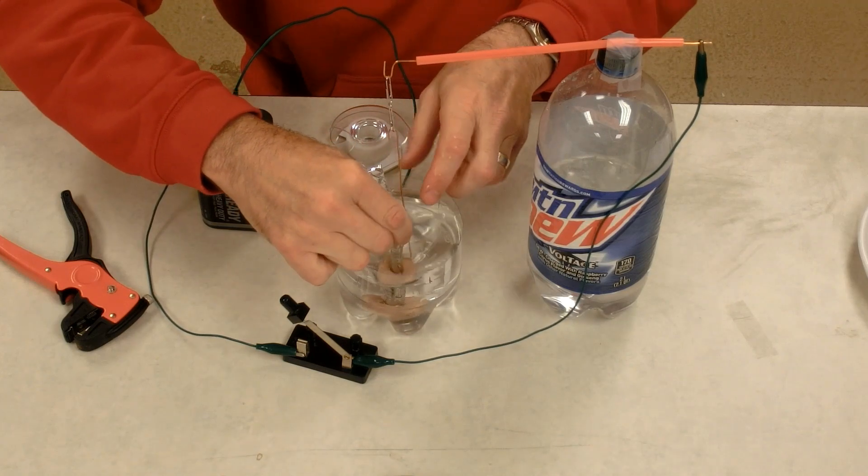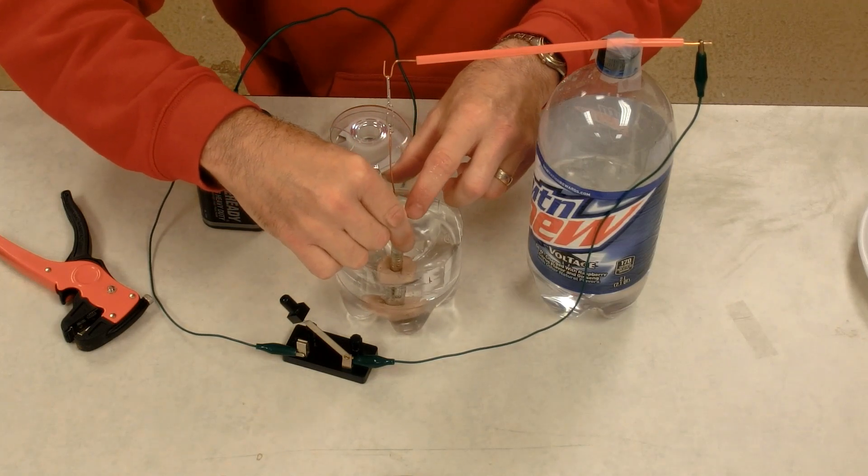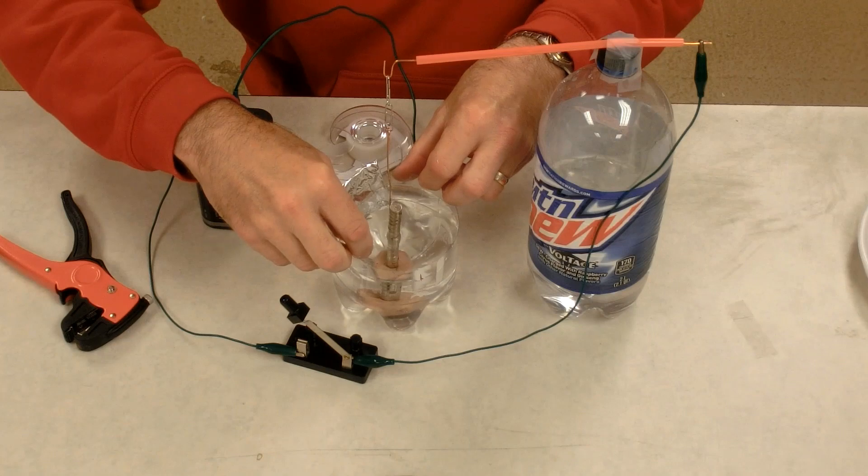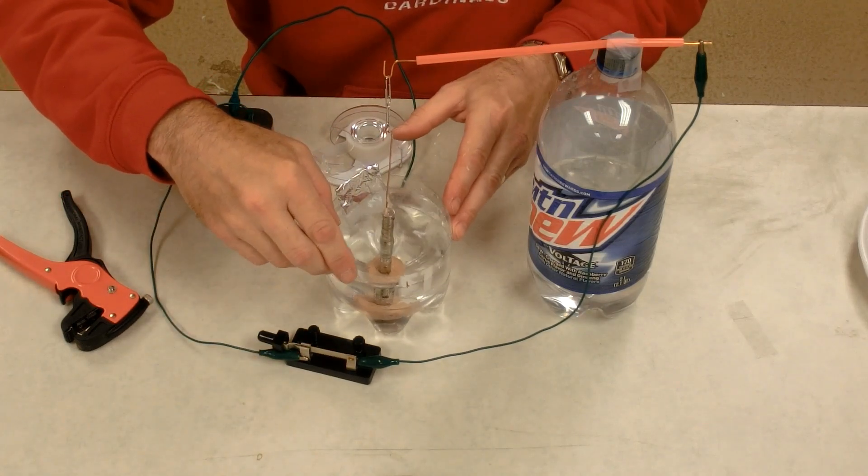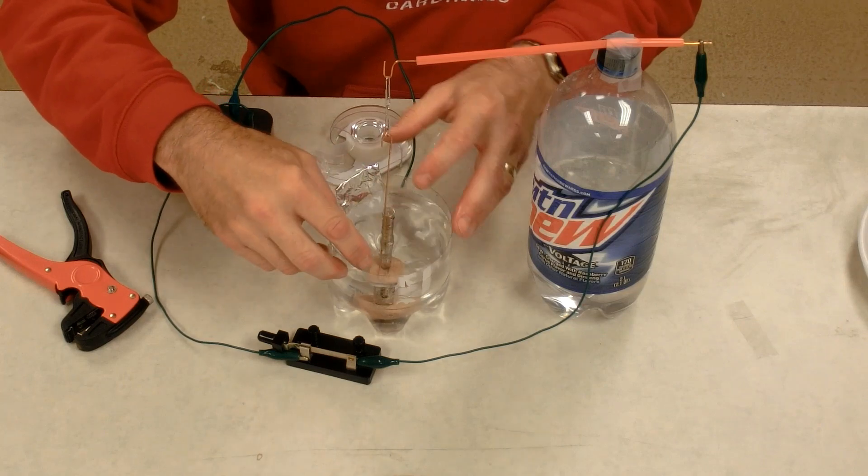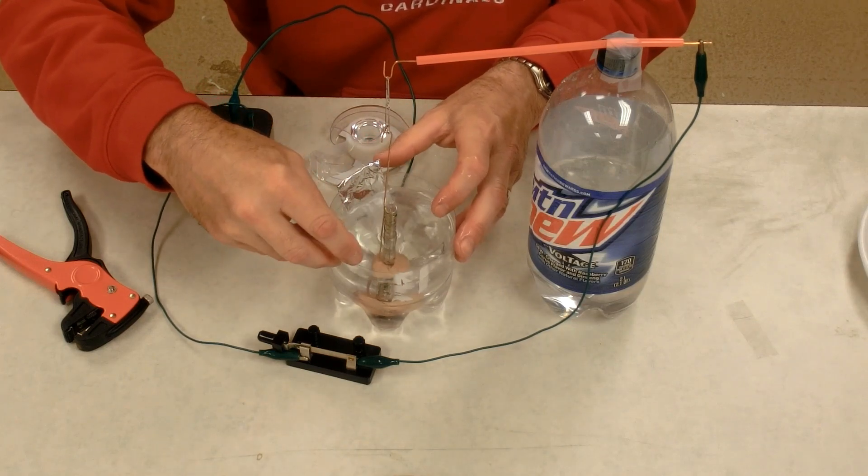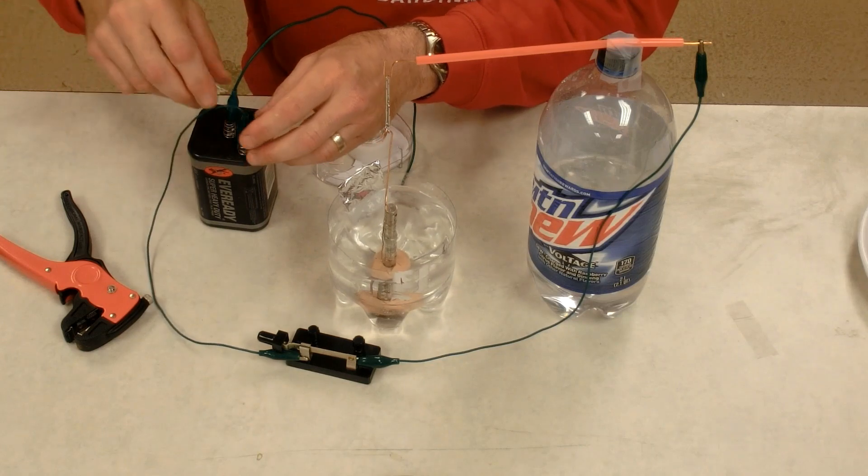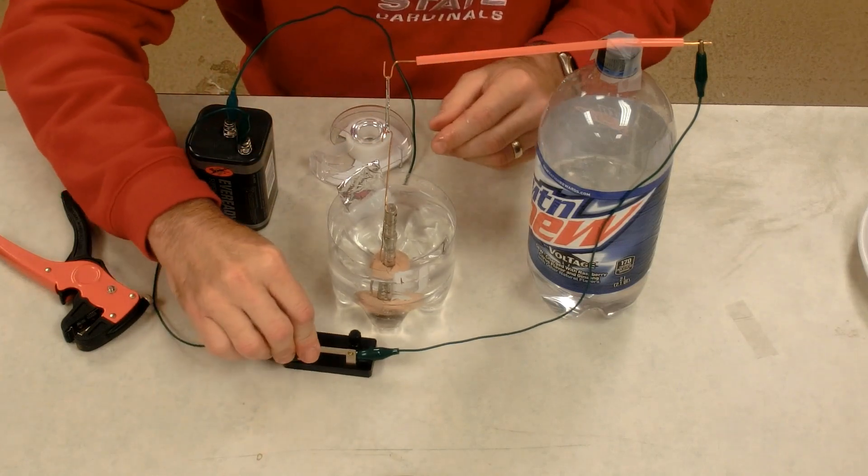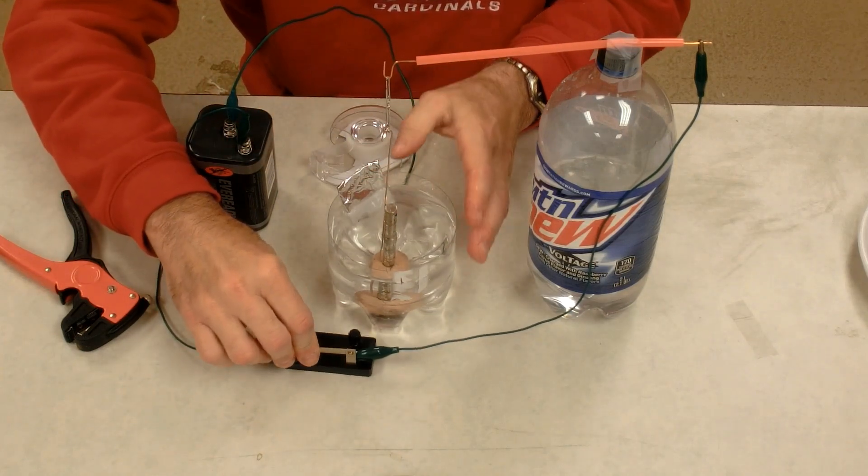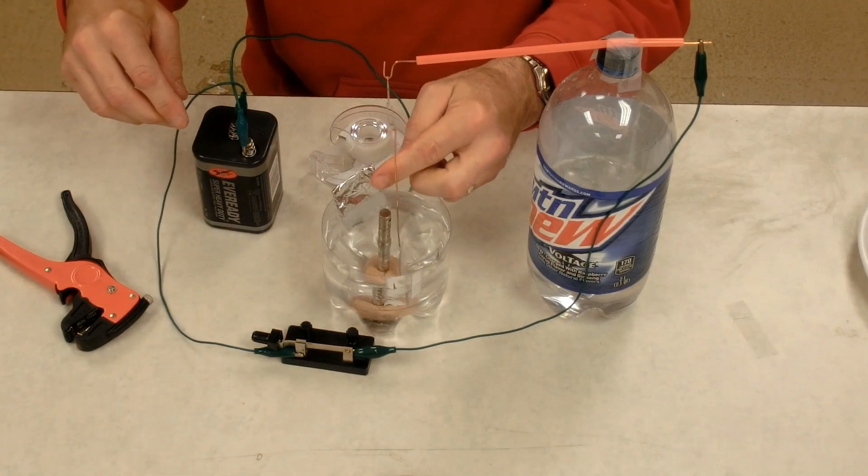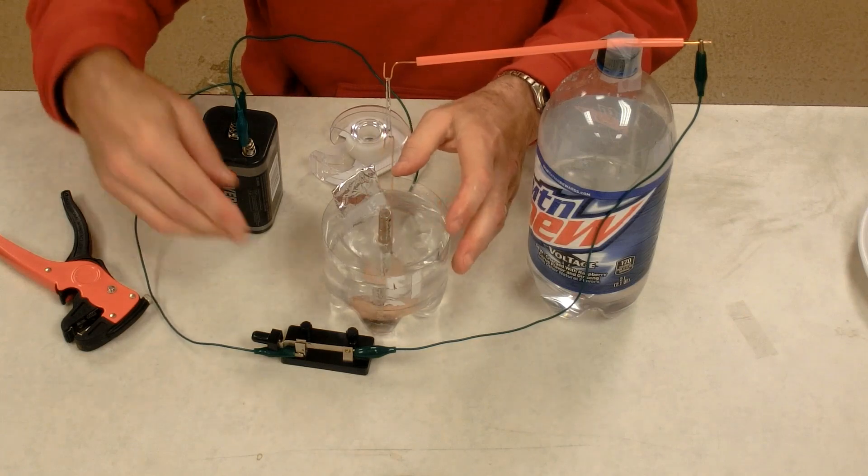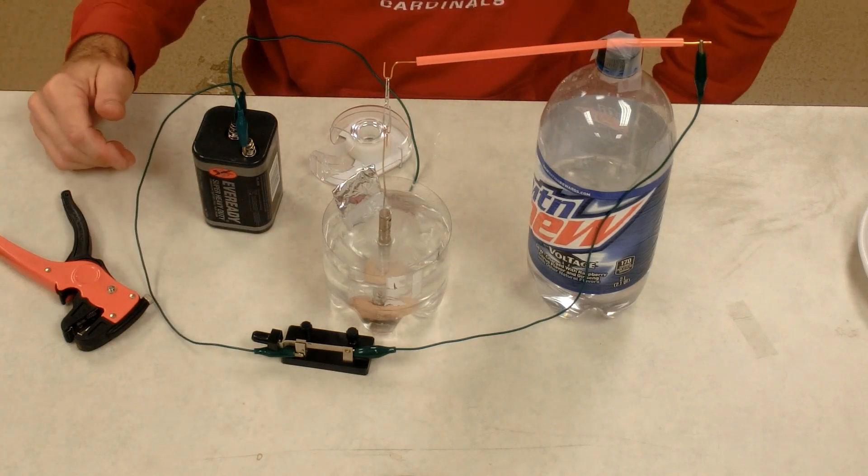But notice, I'm going to flip the magnets over. It was going around counterclockwise. Now it should be back to clockwise. And it's trying, but maybe not so good at the moment. Okay, there we go. This is a replication of the very first direct current motor invented by Michael Faraday in 1821.